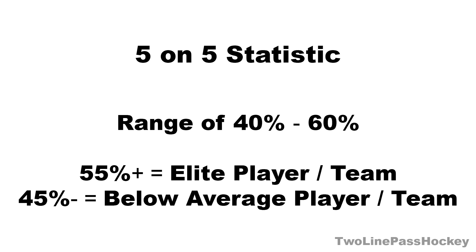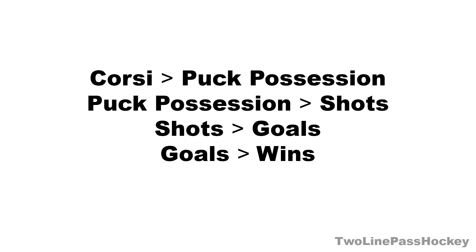Corsi is a 5-on-5 statistic with a general range of 40-60%. Any player or team with a 55% or higher rating is considered elite, while players or teams with a 45% or lower Corsi are below average.